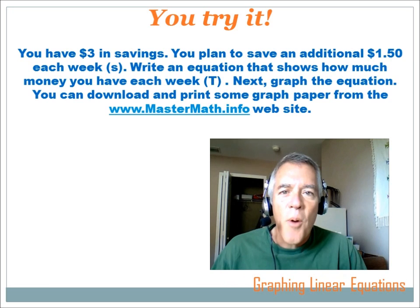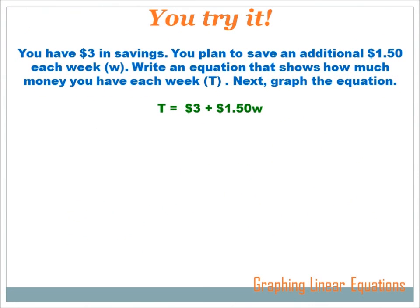Now, you try this one. Hit the pause button, do the problem, and then hit the forward key to move on to the answer. They tell us that we start with $3 in savings, and then we plan to save an additional $1.50 each week. We'll call each week W. Write an equation that shows how much money you have each week, and we'll call that amount of money T, or total amount of money. Next, graph the equation.